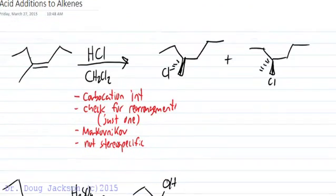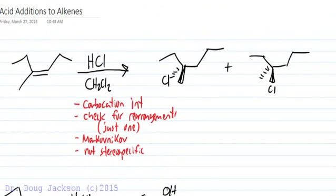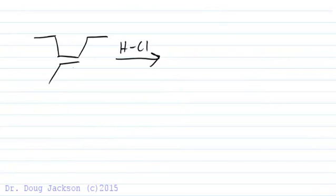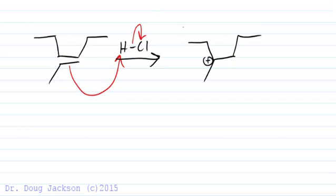Let's look at the mechanism. For the HCl addition in dichloromethane solvent, we are going to nucleophilically grab the hydrogen, leaving the lone pair on chlorine. Our Markovnikov addition results in the following cation.